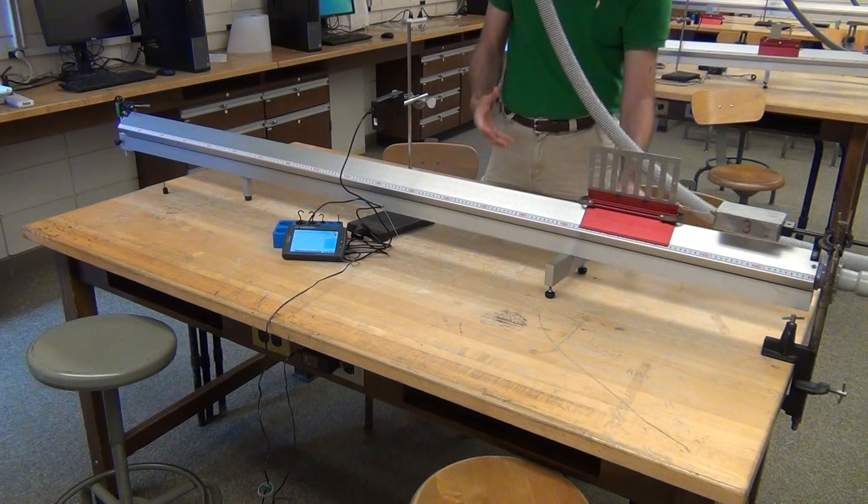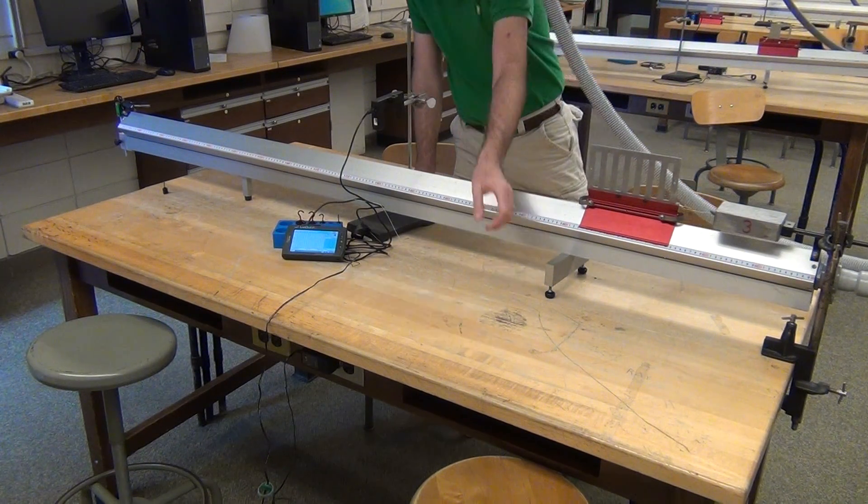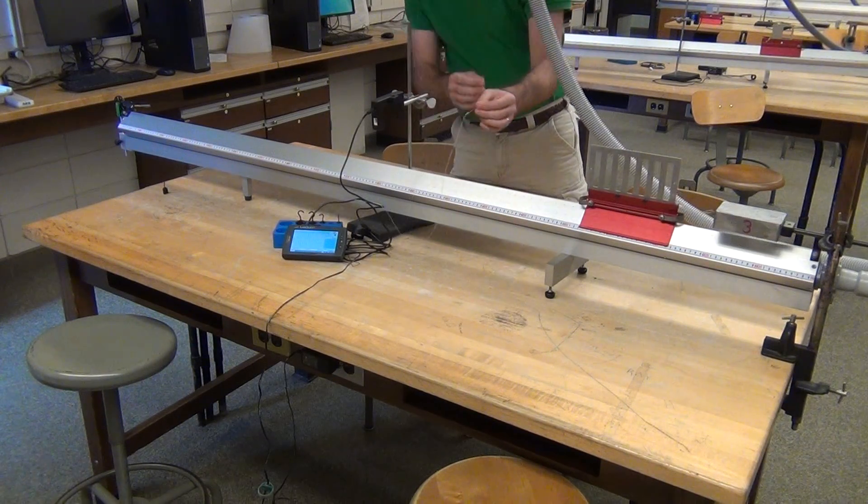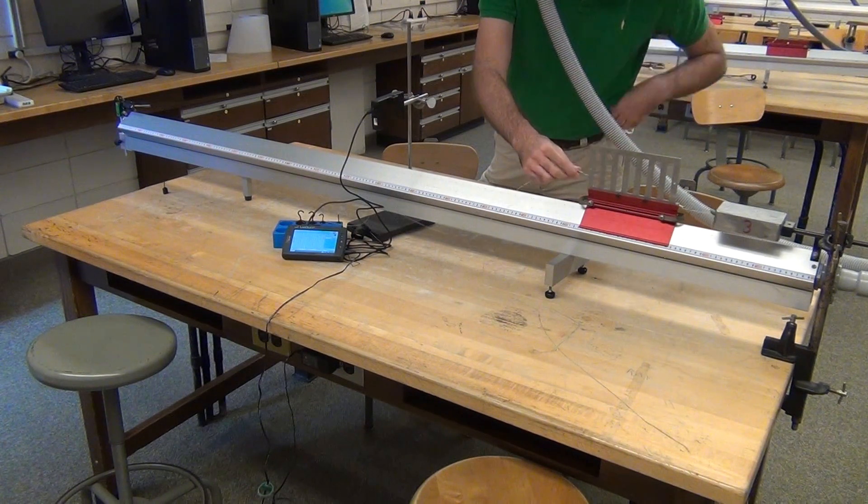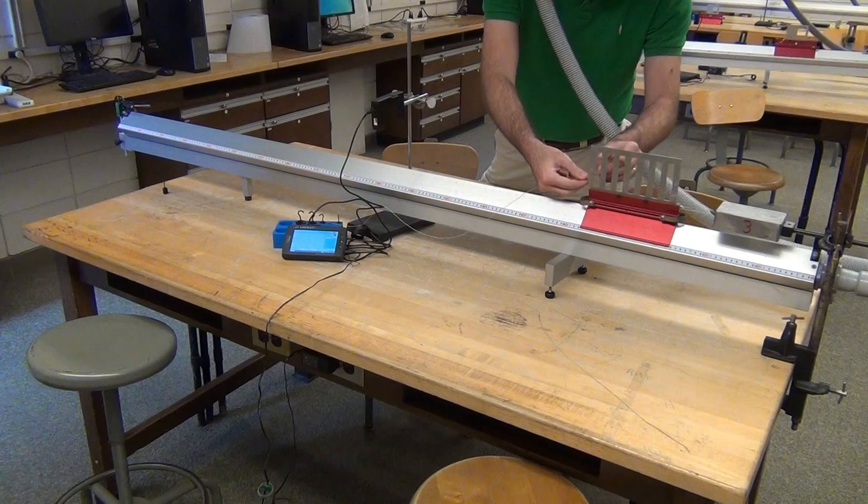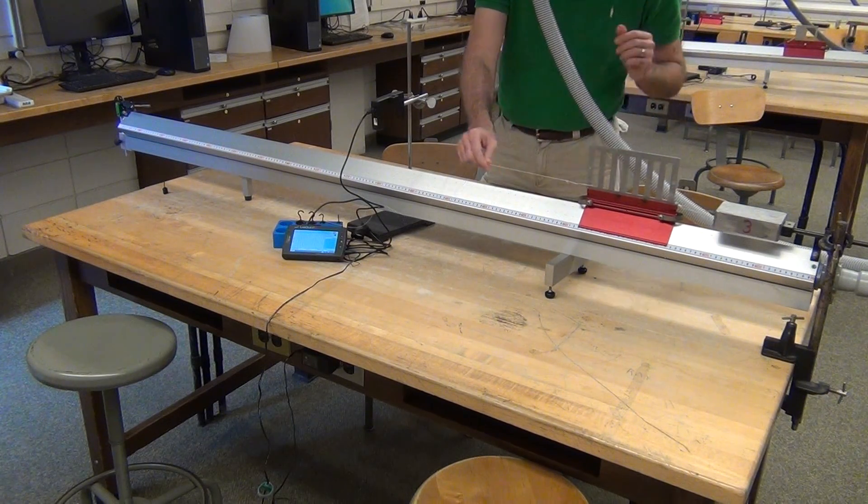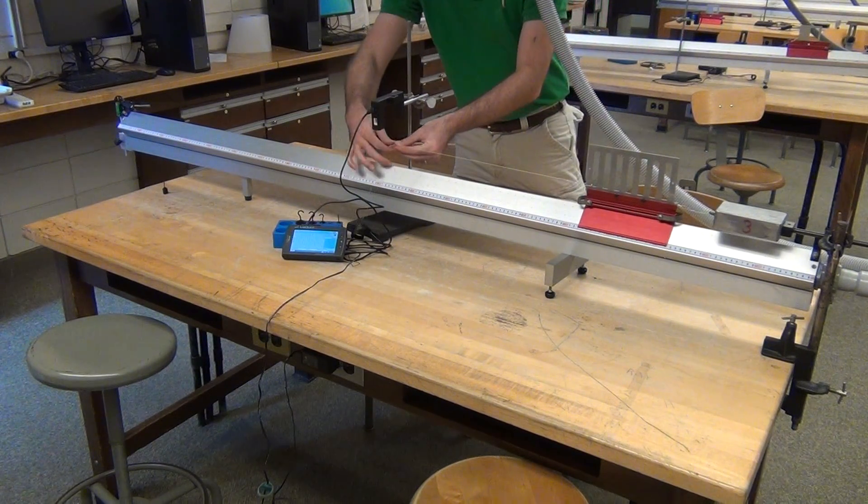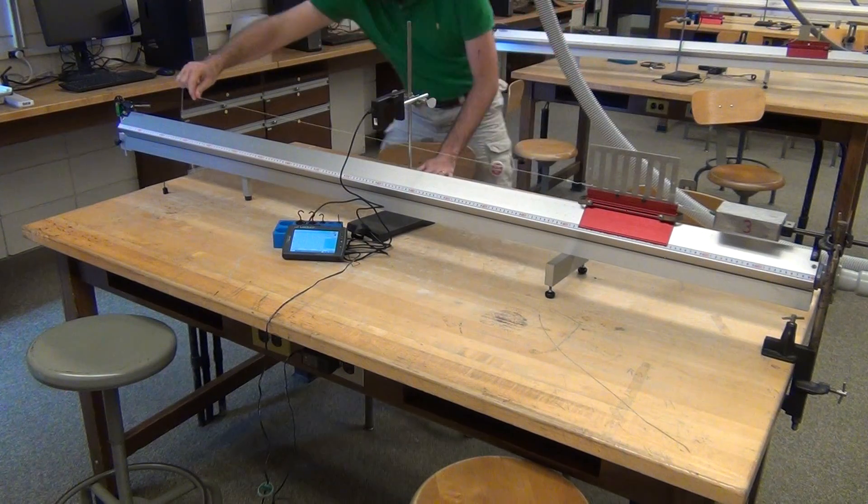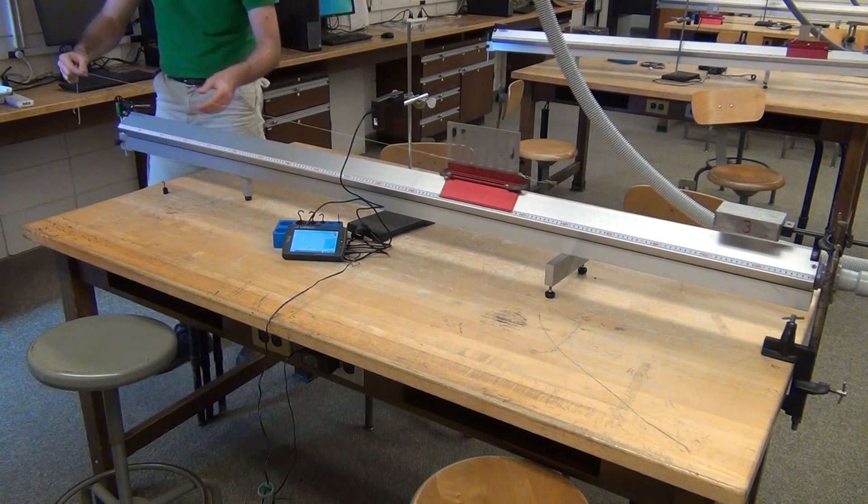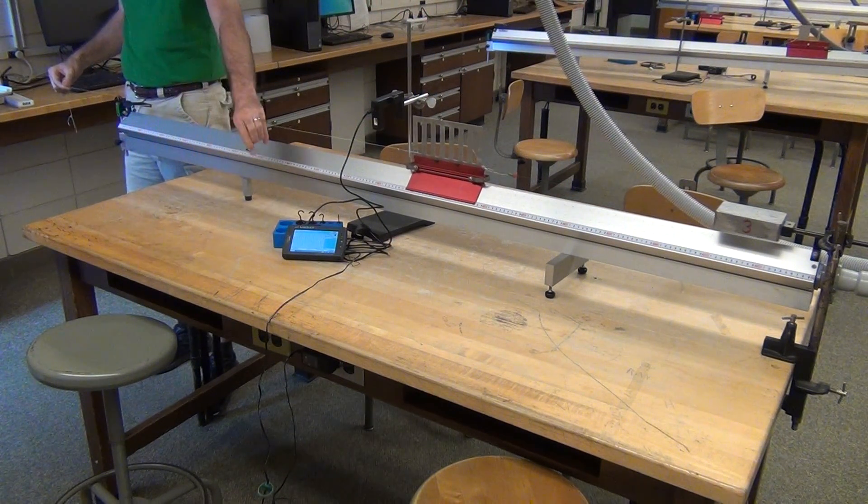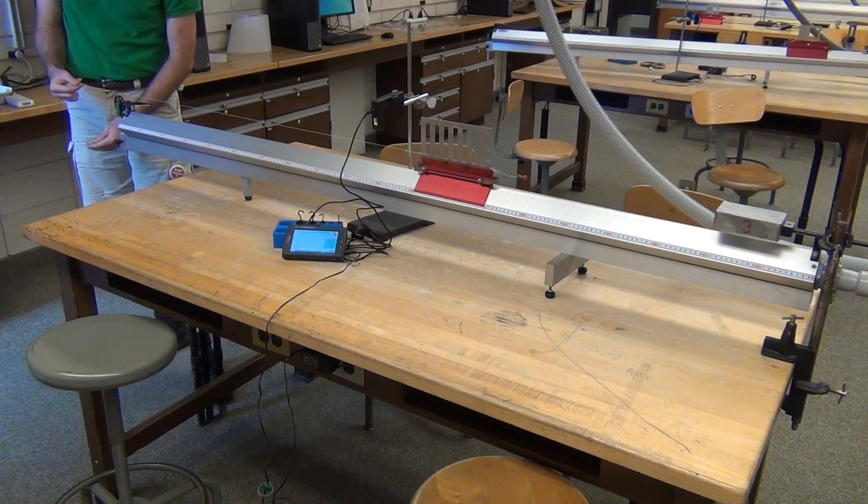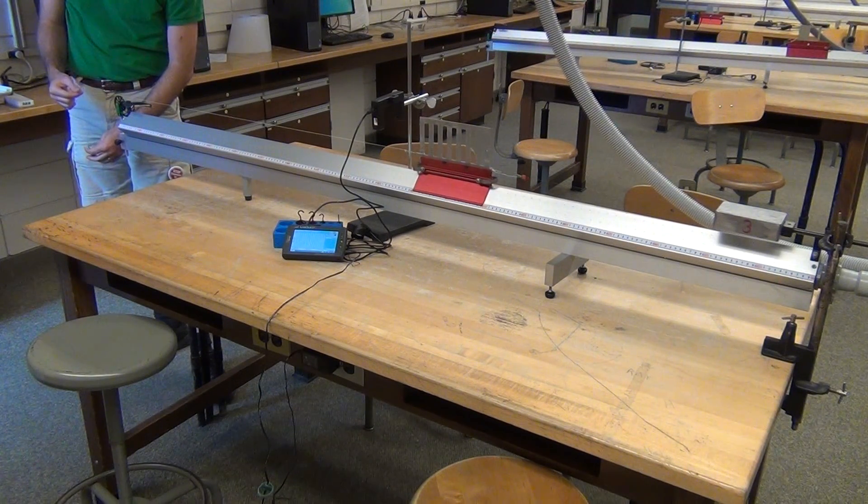And then we'll do other data runs where we slightly modify it with a hanging mass, using a paper clip, attach the string, run the string the length of the table, and take a small mass and hang it from the string and the pulley.